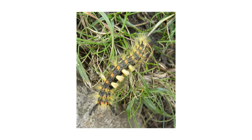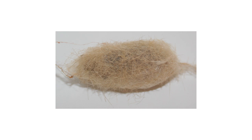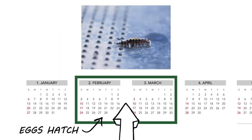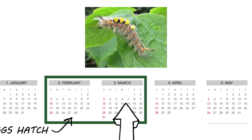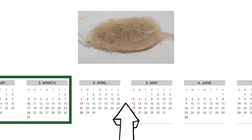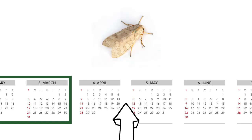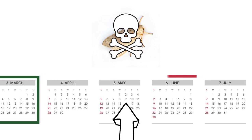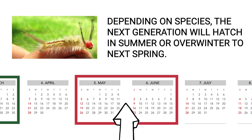If you suspect tussock moth activity, check your gardens and shrubbery for adults or caterpillars. Be sure to also check underneath leaves and structures for signs of activity or cocoons. Tussock moth caterpillars hatch from eggs in late winter or early spring, feed for four to six weeks, then spin themselves into cocoons and pupate for about two more weeks. By April or May, adults will start to emerge, mate, and lay eggs on their cocoons. The adults will die shortly after, and the new generation will either hatch within several weeks or the eggs will overwinter until next spring.